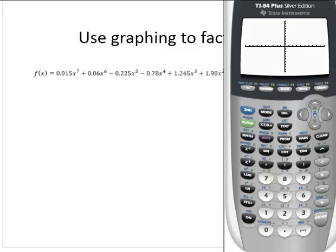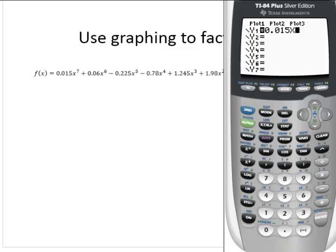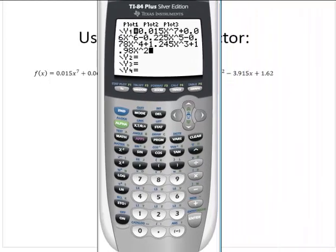We would have Y = 0.015x^7 + 0.06x^6 - 0.225x^5 - 0.78x^4 + 1.245x^3 + 1.98x^2 - 3.915x + 1.62.